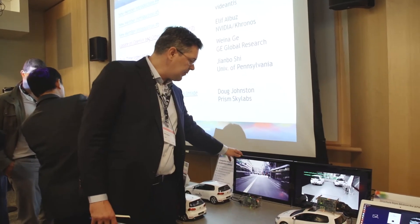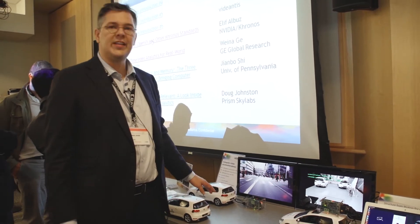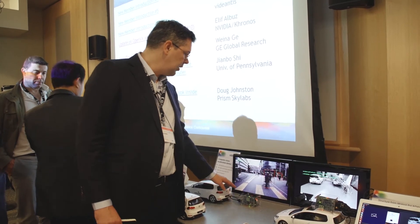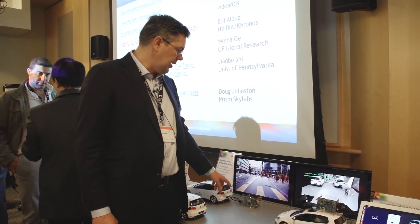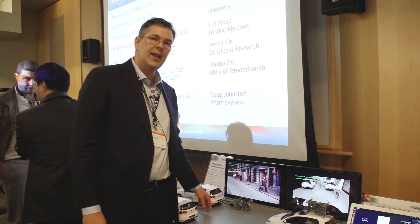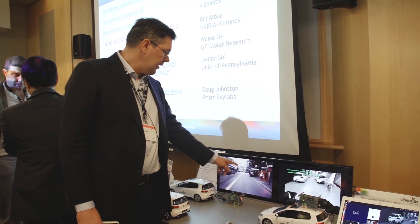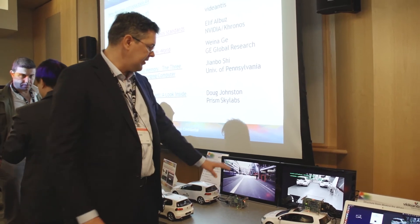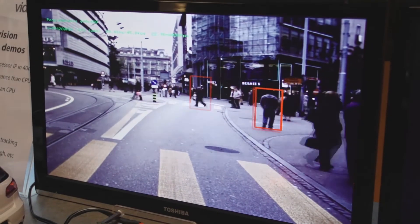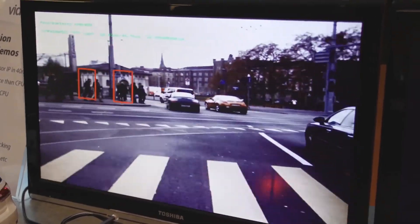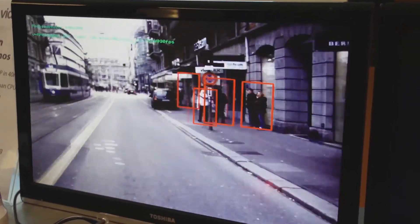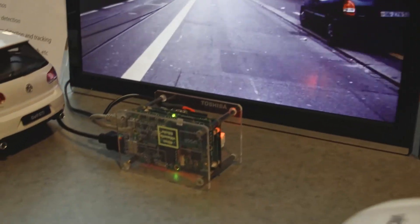Here we have another demonstration: pedestrian detection. Using the same silicon and same board, we run the histogram of oriented gradients algorithm combined with an SVM classifier. What we show here is full resolution, every frame — we detect all the pedestrians. This is the standard Dalal and Triggs algorithm, again running very low power in a very small, area-efficient piece of silicon.